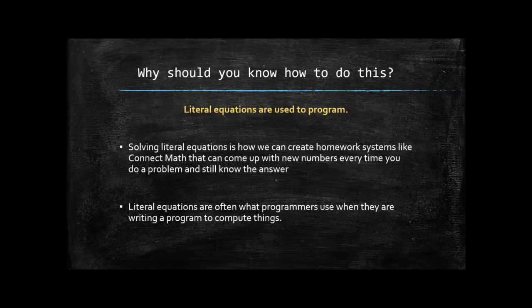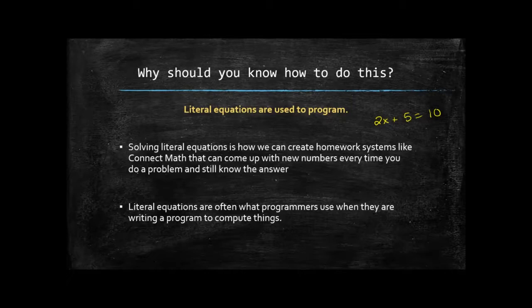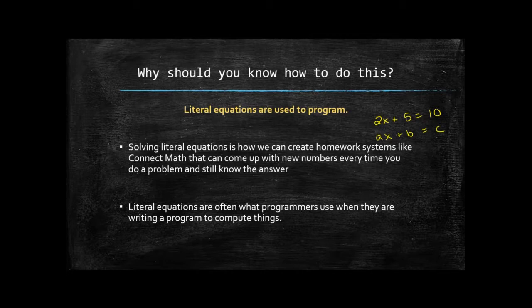Some other uses of literal equations are for programming. When we have homework systems like Connect Math, you may wonder: it gives me different numbers every time — how does it know what the answer is? Someone has programmed it, and they've solved the equation with variables instead of numbers so that they know what form the outcome is going to look like. Then all they have to do is plug in the numbers with a computer to check your answer. For example, if you're solving 2x + 5 = 10 for x, in the background each of those numbers is actually a letter. You solve for x with the letters, get a formula, generate random numbers, plug them in, and the system knows what the answer is supposed to be.